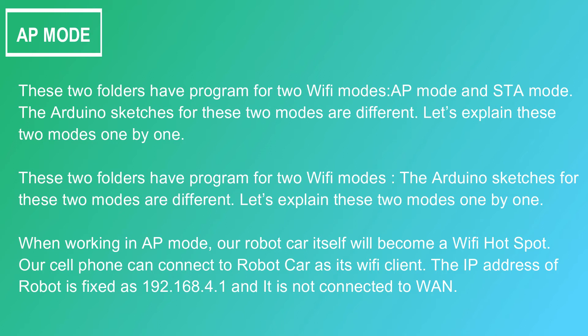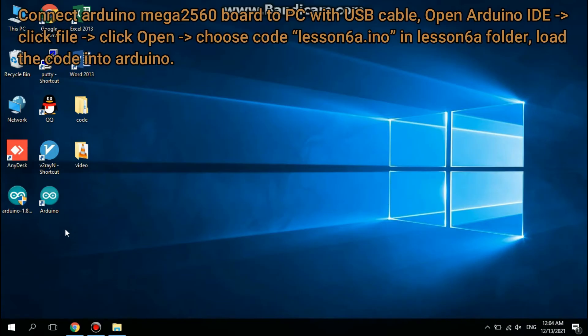When working in AP mode, our robot car itself will become a Wi-Fi hotspot. Our cell phone can connect to the robot car as its Wi-Fi client. The IP address of the robot is fixed as 192.168.4.1 and it is not connected to WAN.